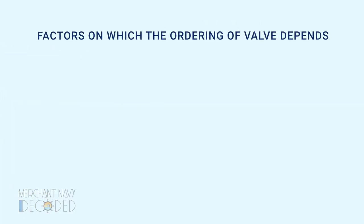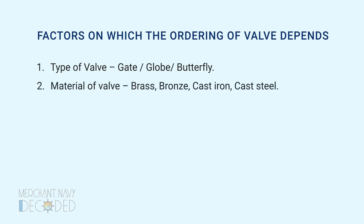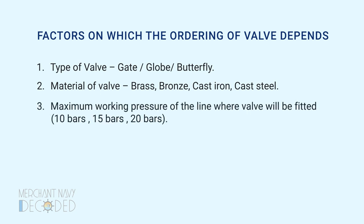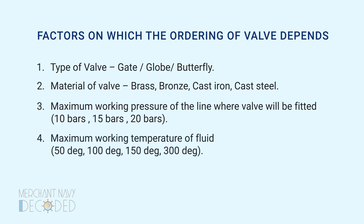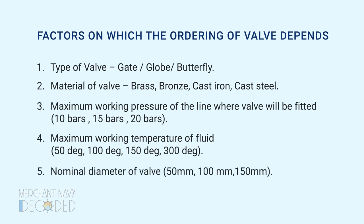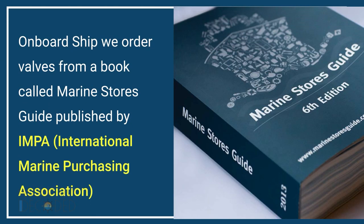The factors on which the ordering of a valve depends are: type of valve, whether it is a gate valve, globe valve, or butterfly valve; material of the valve, which can be brass, bronze, cast iron, cast steel, and so on; maximum working pressure of the line where the valve will be fitted, for example 10 bars, 15 bars, or 20 bars; maximum working temperature of fluid, for example 50, 100, 150, or 300 degrees centigrade; and nominal diameter of the valve, for example 50 mm, 100 mm, or 150 mm. Onboard ship, we order valves from a book called the Marine Stores Guide, published by IMPA — the International Marine Purchasing Association.